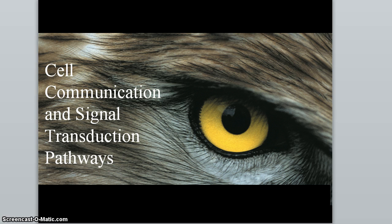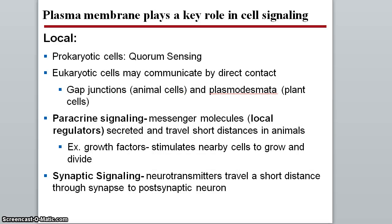Let's first talk about cell signaling. Cell signaling or cell communication is just when cells talk to each other. Cells need to talk to each other to send messages, to know where other cells are, or if they need to work together to do something. They can't talk the same way we do, but they can communicate with different molecules traveling between cells. The plasma membrane plays a really key role in facilitating this cell communication.